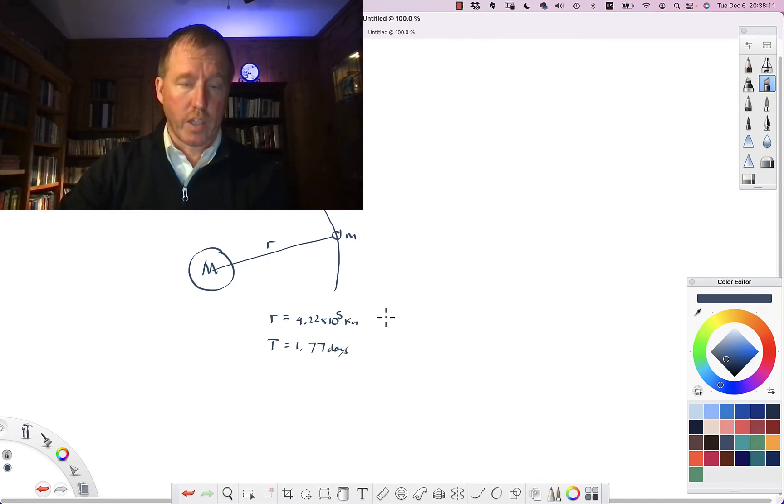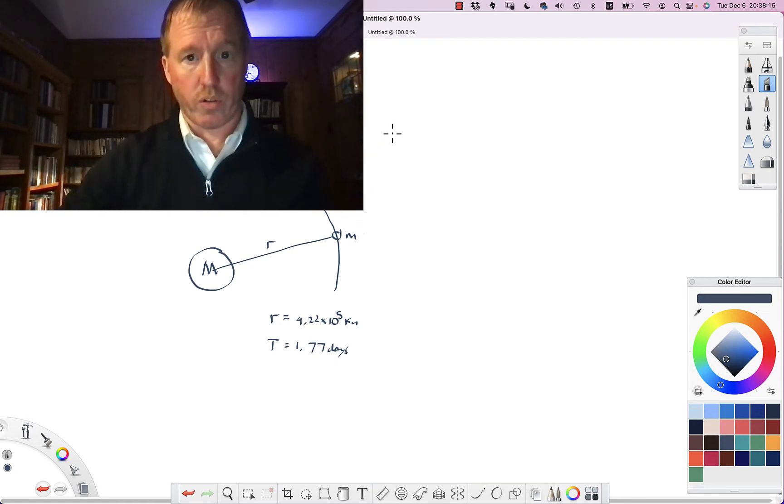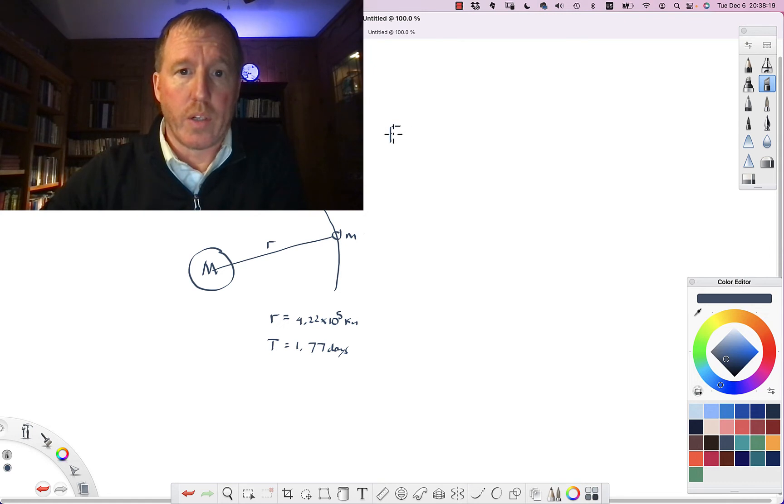Now, how can we figure out the mass of Jupiter from this? Well, we can use Newton's universal law of gravity. So what we're going to do is say that there's this force holding that moon in, that is equal to its mass times acceleration. What is the force? Well, we'll use Newton's universal law of gravitation on that side and on this side.